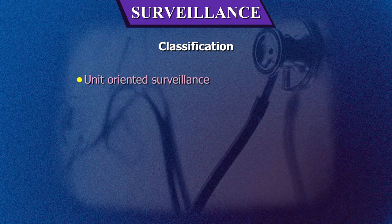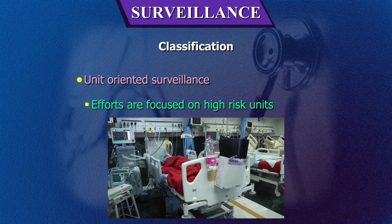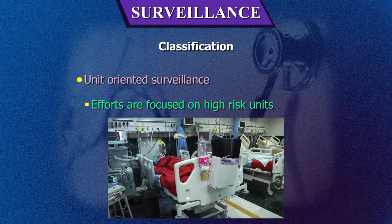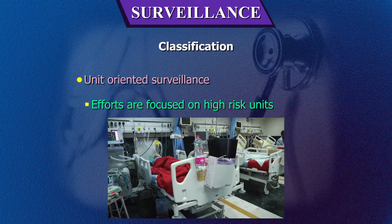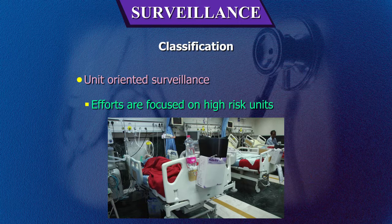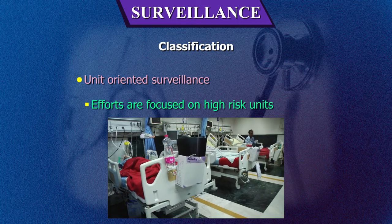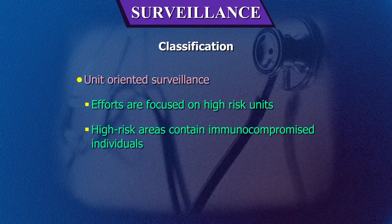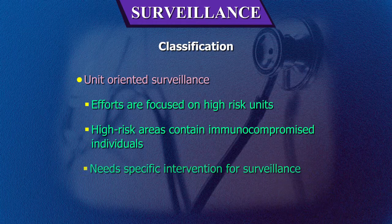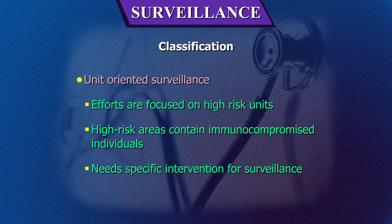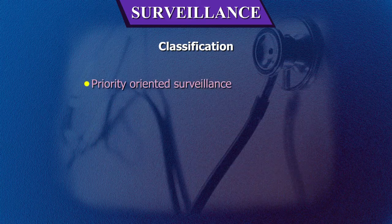Unit-oriented surveillance is where efforts are focused on high-risk units such as ICUs, OTs, and post-operative wards. These high-risk areas contain immunocompromised individuals and thus need specific intervention for surveillance.